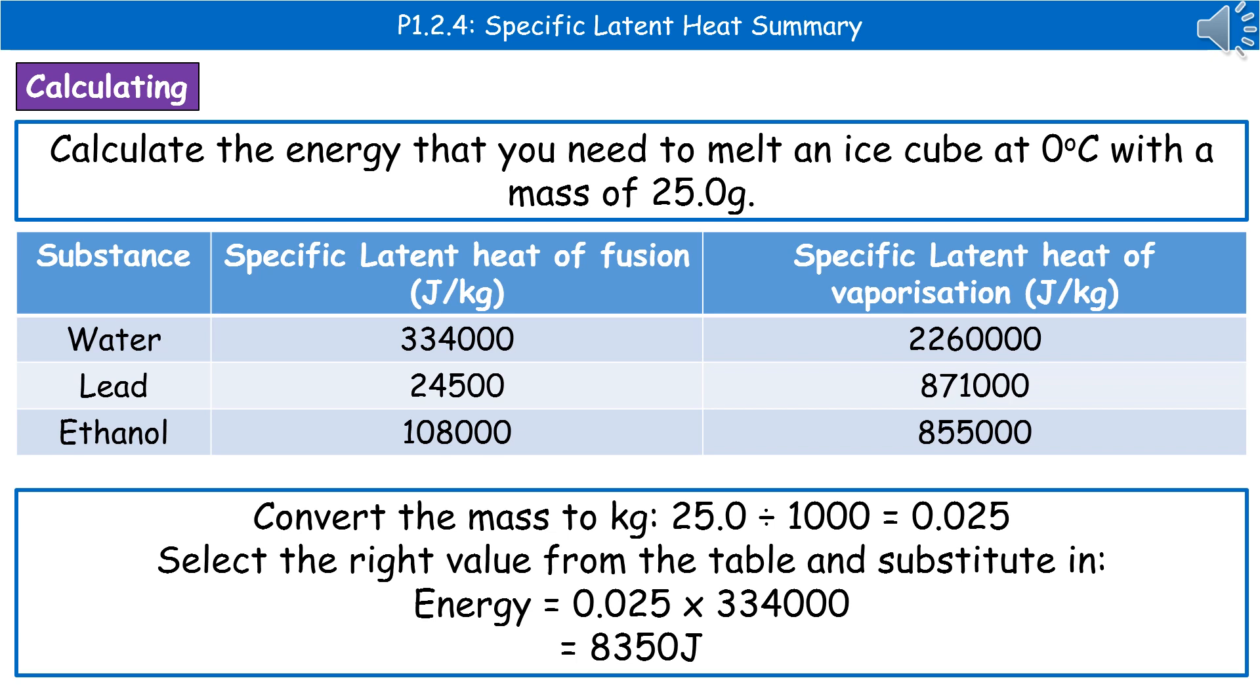So the table that they will give you won't just have water and the one specific latent heat. It's going to have a range of materials and it will have the specific latent heat of fusion and the specific latent heat of vaporization. Because the first part of the challenge here is making sure that you can pick the right number from the table.